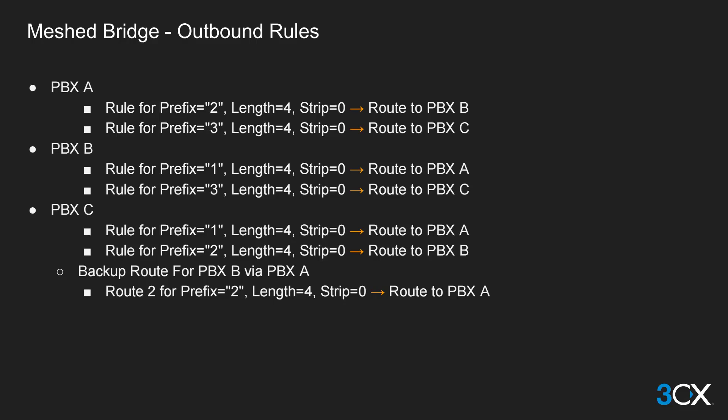PBX A will have an outbound rule to connect to PBX B using a prefix of 2 and a length of 4 digits, with no digits stripped. PBX A will also have an outbound rule to PBX C using a prefix of 3 and a length of 4 digits, no stripping. PBX B will have an outbound rule to PBX A with prefix 1, length 4, no stripping, and to PBX C with prefix 2, length 4, no stripping. PBX C will have an outbound rule to PBX A with prefix 1, length 4, no stripping, and to PBX B with prefix 2, length 4, no stripping.